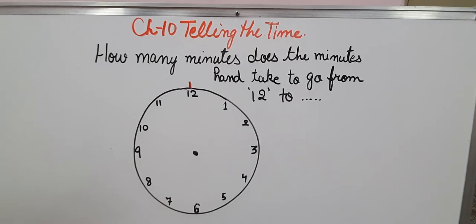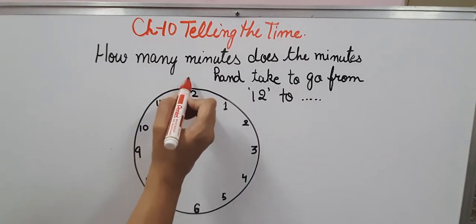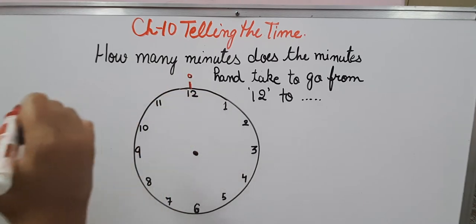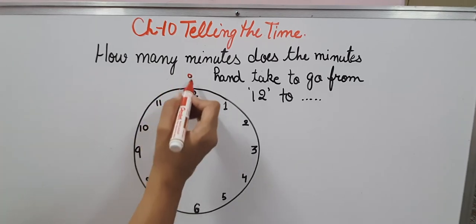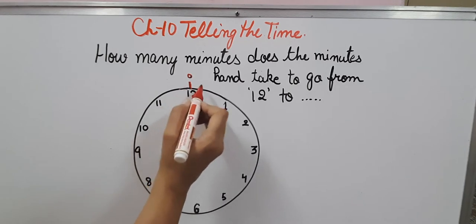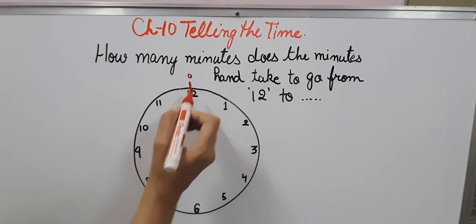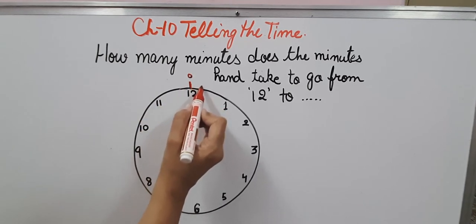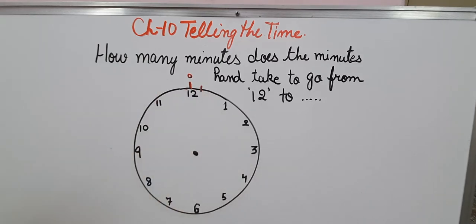Why are these minutes counted as 5 minutes only? Because at 12 we find 0, the starting point. So when the minute hand moves to the next point, the second hand takes the round.